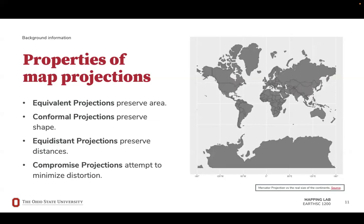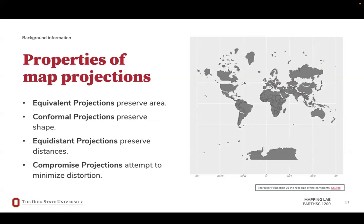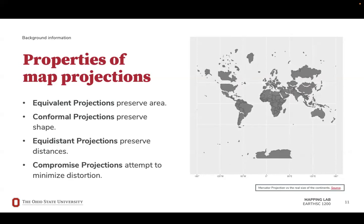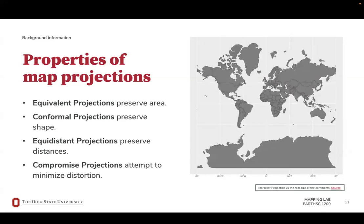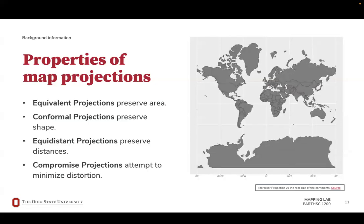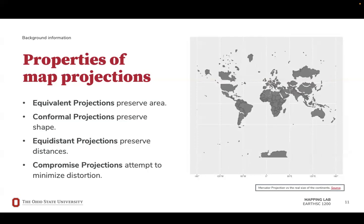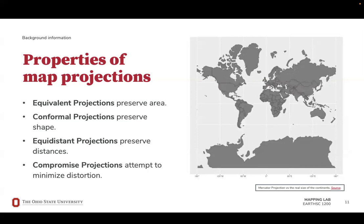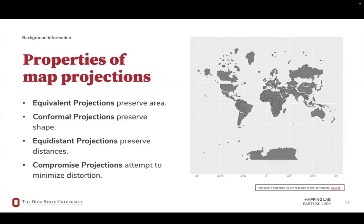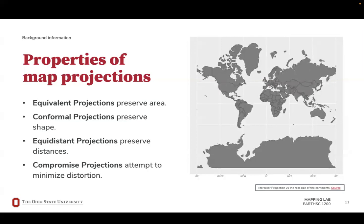Conformal projections accurately represent shapes and angles. The Mercator projection is conformal — even though it over-represents the size of continents, the actual shape of the continents is correct. Finally, we have equidistant projections which preserve distances along certain directions. It isn't possible to represent the correct distances in every direction, as this would mean that everything is correctly represented. Instead, only the distance along meridians or along latitudes can correctly be represented.